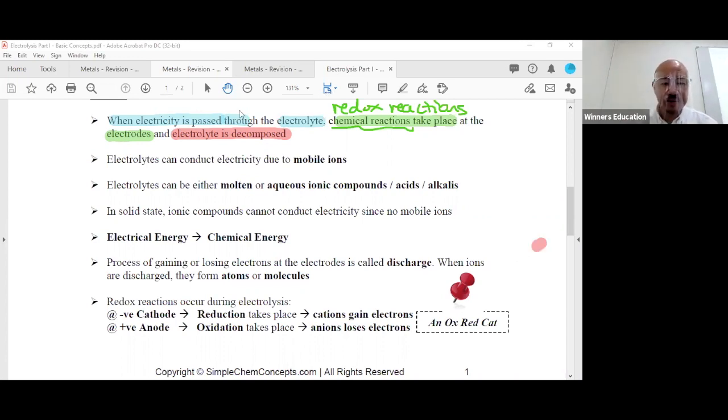Who are the electrolytes? Electrolytes allow you to conduct electricity; they have mobile ions. We learned this since secondary school: acids, bases, salts. Electrolytes can be either molten, meaning liquid, or aqueous state. It can be ionic salts—molten salts conduct electricity, soluble salts conduct electricity because of the mobile ions. Can be acids and alkalis. In solid state, the ionic compounds cannot conduct electricity because there are no mobile ions; they are trapped inside the giant ionic lattice structure.